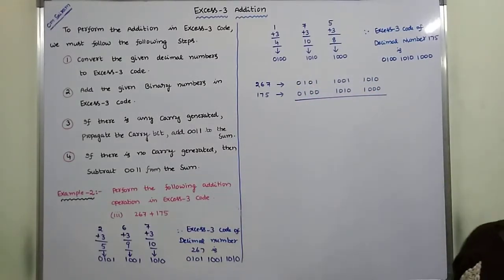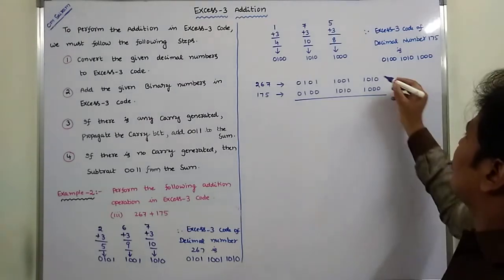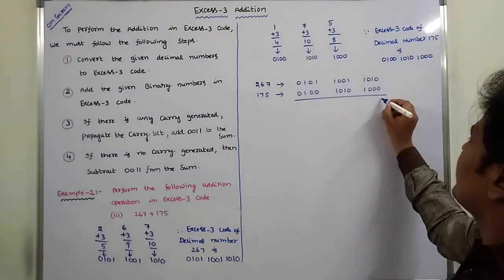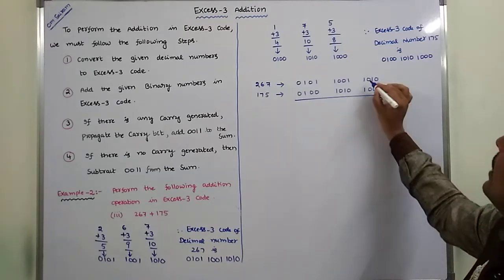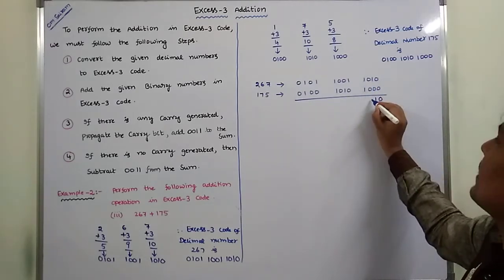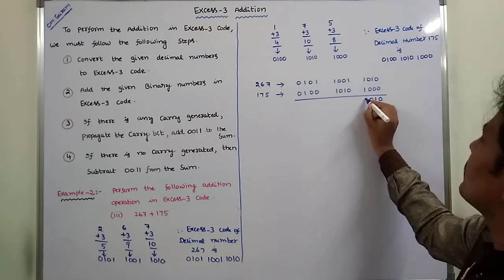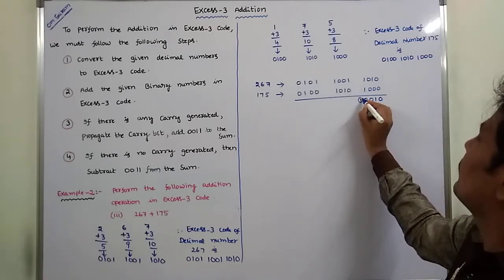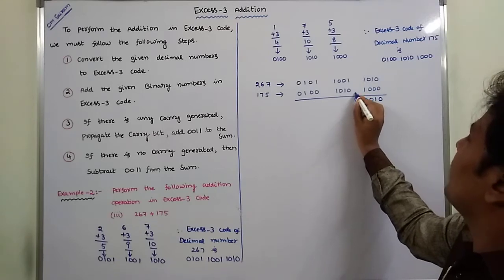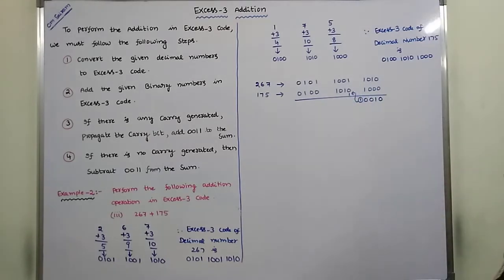Now we perform the addition operation on the rightmost 4-bit group: 0 plus 0 is 0, 1 plus 0 is 1, 0 plus 0 is 0, and 1 plus 1 gives 0 with carry 1. This carry 1 is forwarded to the next higher 4-bit group.